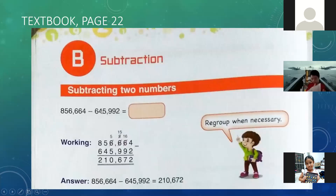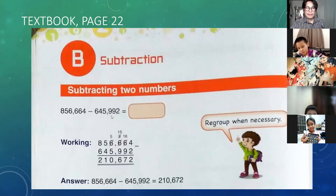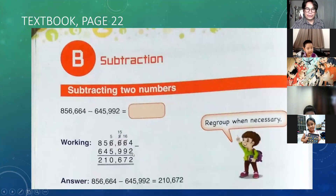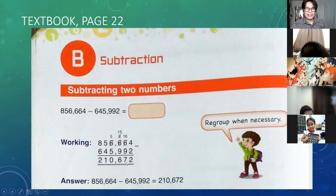I'm going to explain and show you examples of subtracting two numbers. The equation is 856,664 minus 645,992 equals blank — regroup when necessary. So 4 minus 2 equals 2. 6 becomes 16 because we borrow from the next digit, so 6 becomes 5. Then 16 minus 9 equals 7.